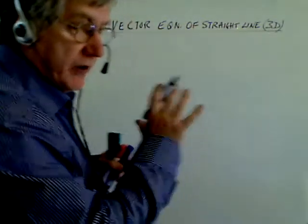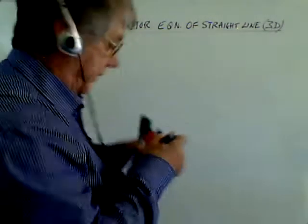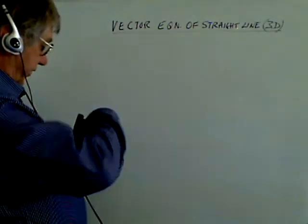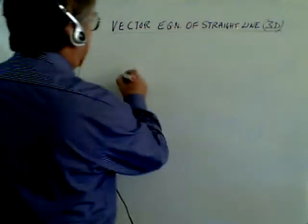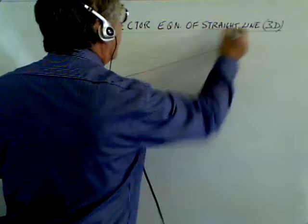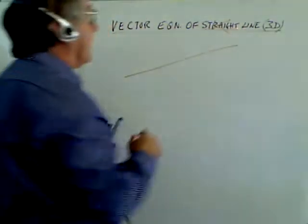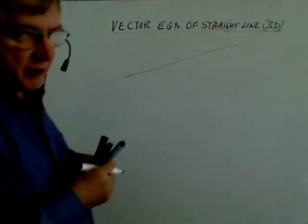I'll just give you the equation and I'll describe it briefly. For a straight line, and here we have a straight line in space, well, what other type of line is there? So we can forget the straight, so it's a vector equation of a line in 3D.